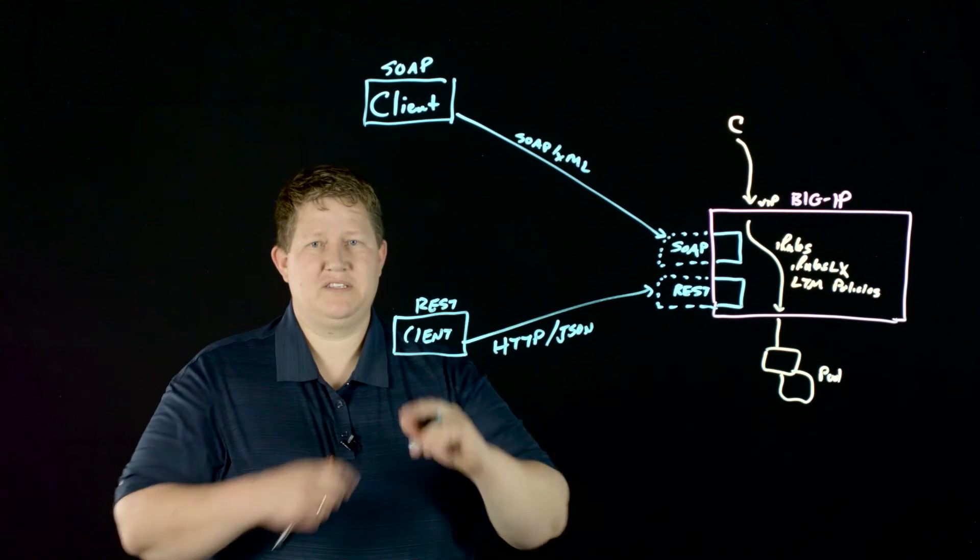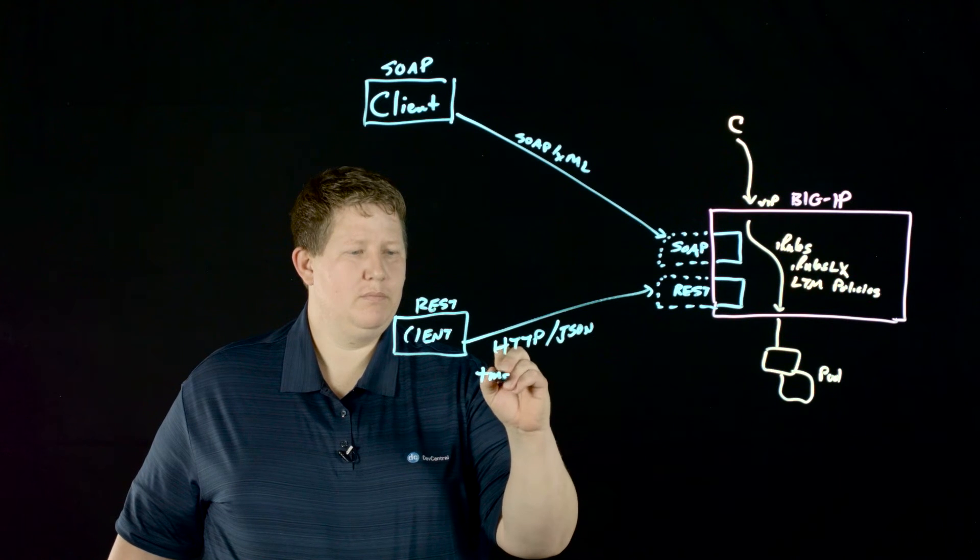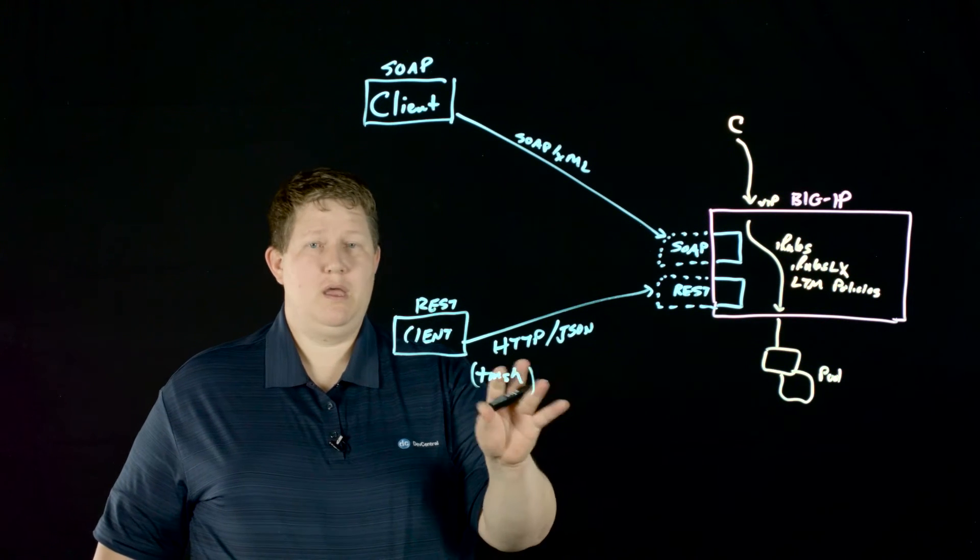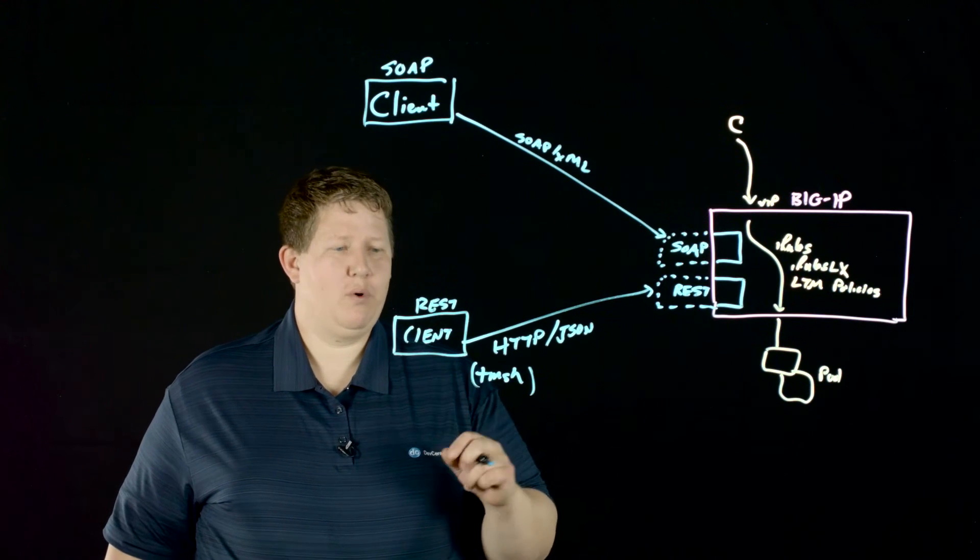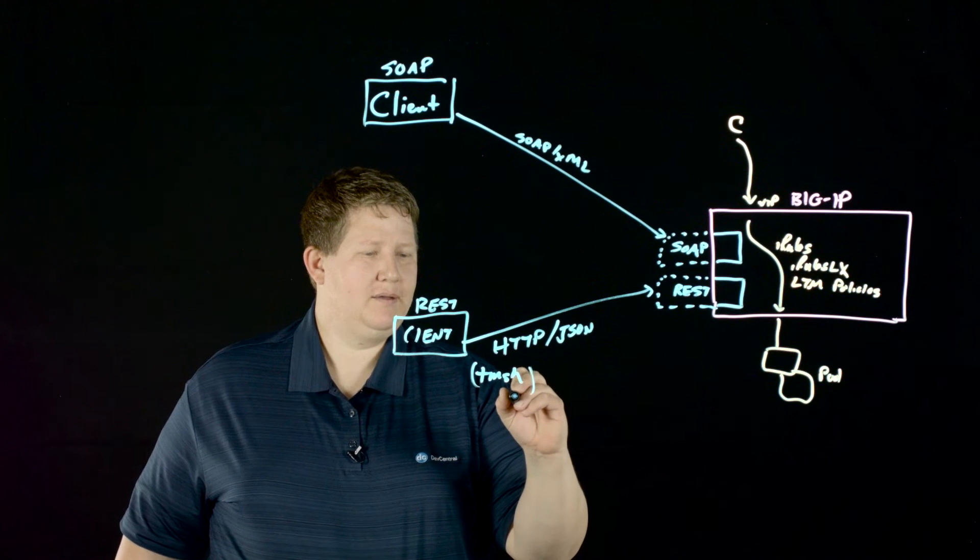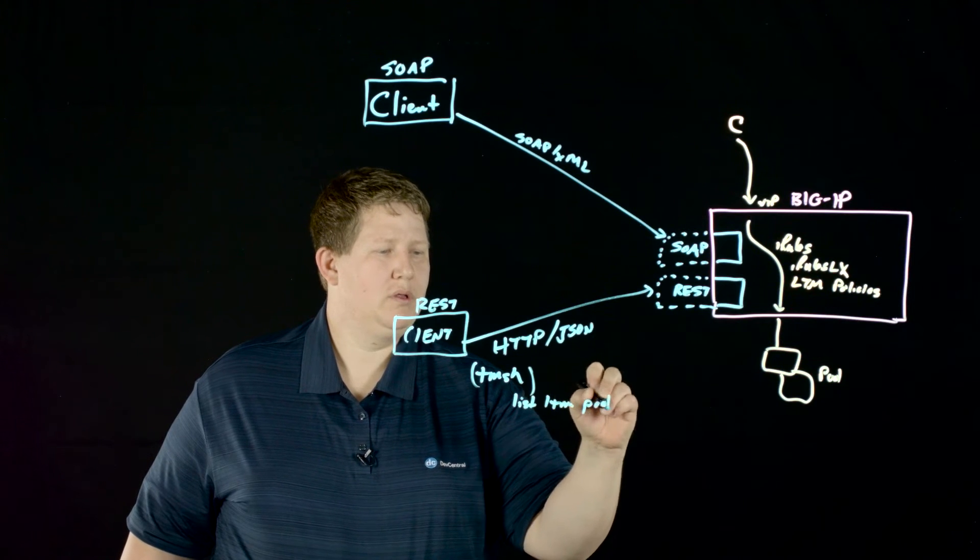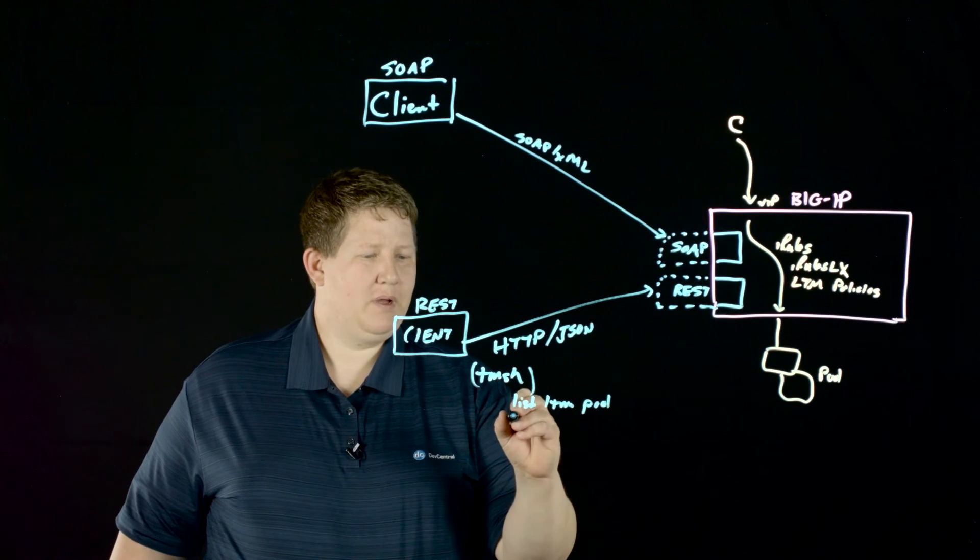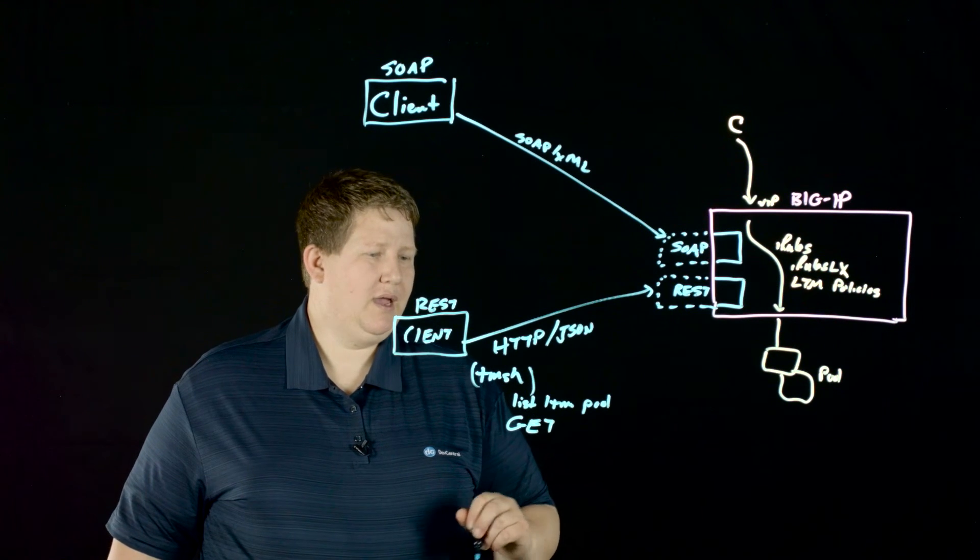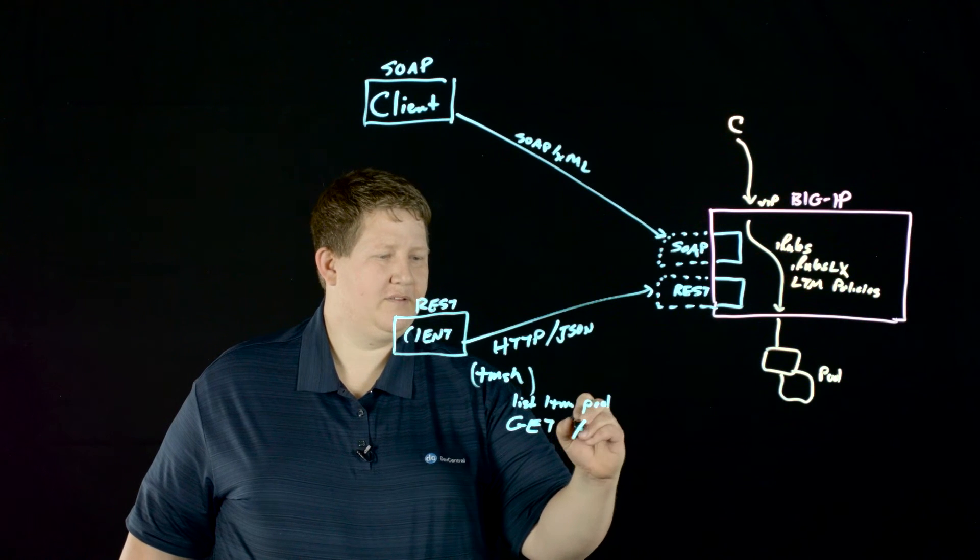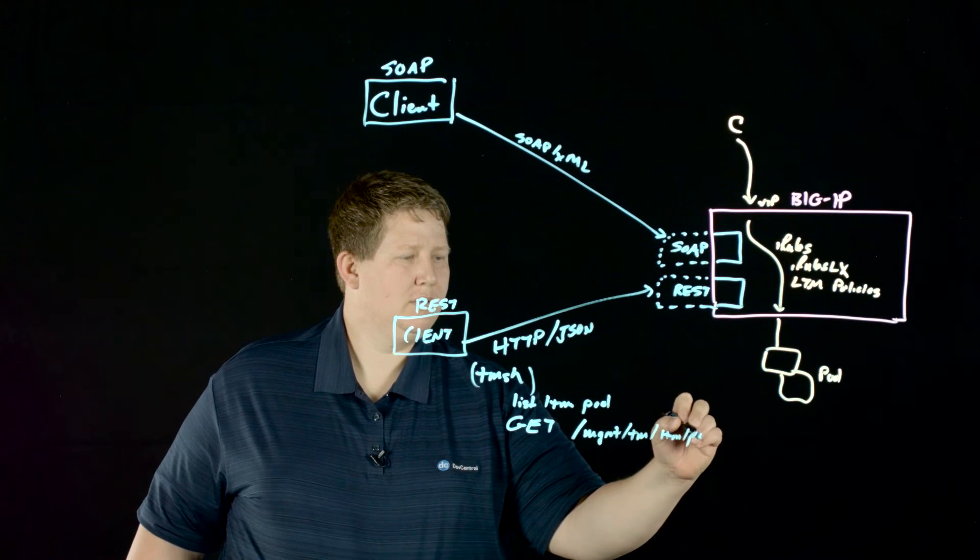Whereas with a REST client, you can do things like if the REST interface is mostly a wrapper for TMSH. There's more to it than that, but essentially from a config standpoint, it wraps TMSH. If you want to list LTM pool, you do that in TMSH. From an HTTP standpoint, that's a GET in HTTP and you're going to GET against the URL. Management, TM, LTM. Cool.